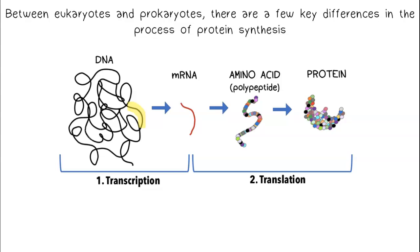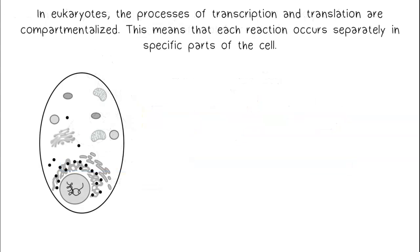Between eukaryotes and prokaryotes, there are a few key differences in the process of protein synthesis. In eukaryotes, the processes of transcription and translation are compartmentalized, meaning that each reaction occurs separately in specific parts of the cell.